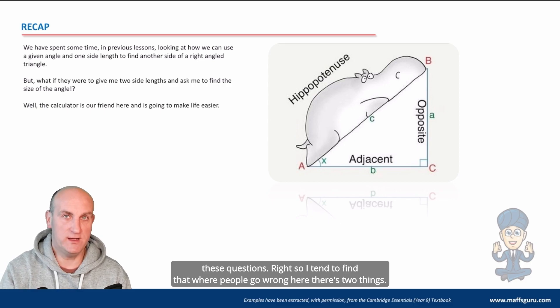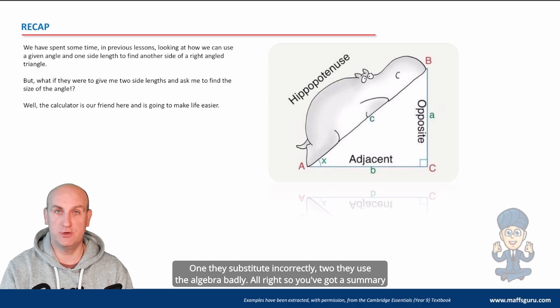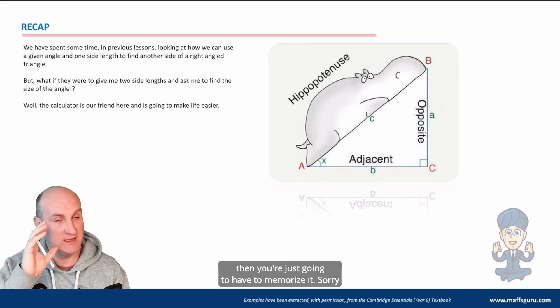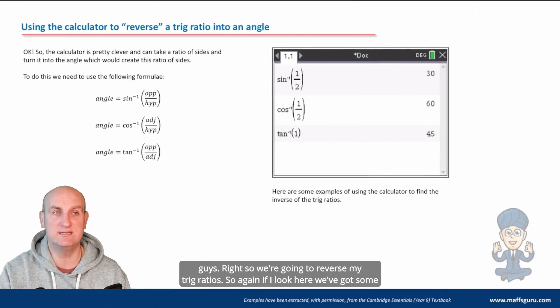So I tend to find that where people go wrong here, there's two things. One, they substitute incorrectly. Two, they use the algebra badly. So you've got a summary book over here in Australia. Use it. If you don't, then you're just going to have to memorize it. Sorry, guys.